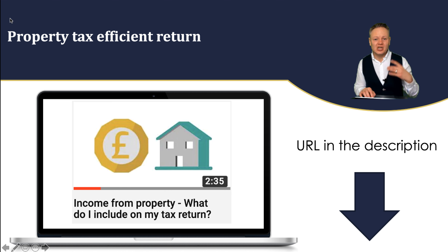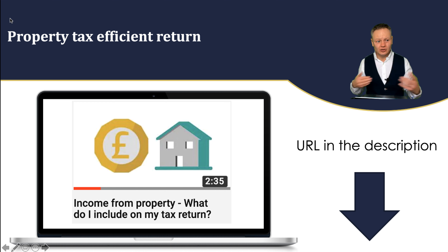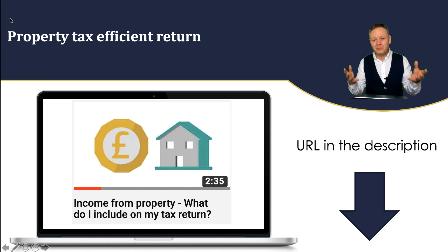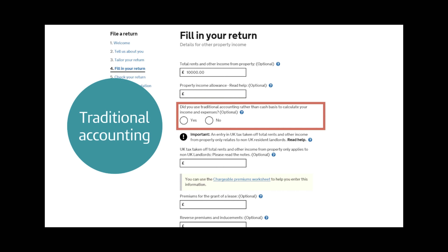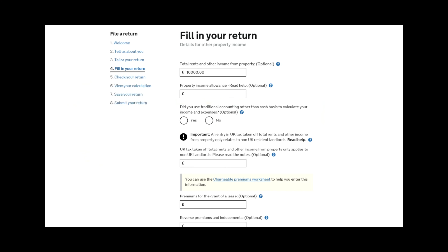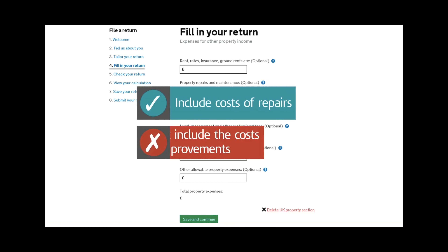Your allowable cost for use of home could be £256, and if you go to a few networking meetings and see a letting agent or estate agent and your tenants, your travel to and from those will get you 45p per mile for up to 10,000 miles in a car. So you're probably better off not using the £1,000 allowance — you're better off itemising your actual costs instead.